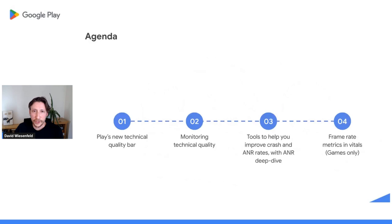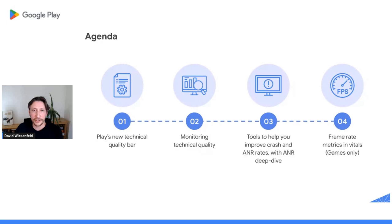Okay, let's walk through the high-level agenda. First, we'll talk about the new technical quality bar. Then we'll discuss how Vitals can help you monitor and keep an eye on technical quality. After that, we'll discuss some new tools we've built to help you improve your crash and application not responding, also known as ANR rates, and we'll do a deep dive on some of the common types of ANRs and how to address them. And then finally, we'll touch on the frame rate metrics for games.